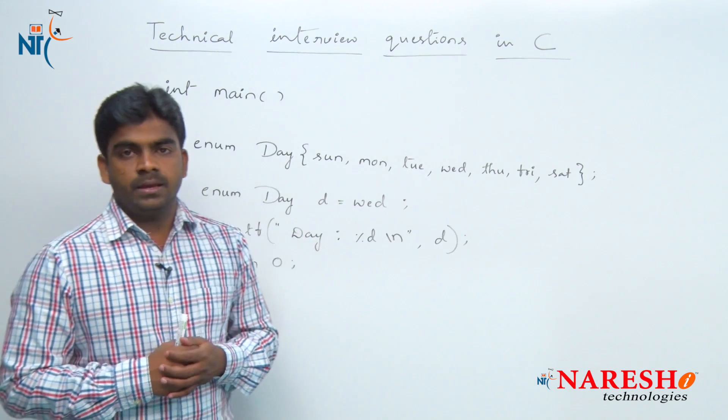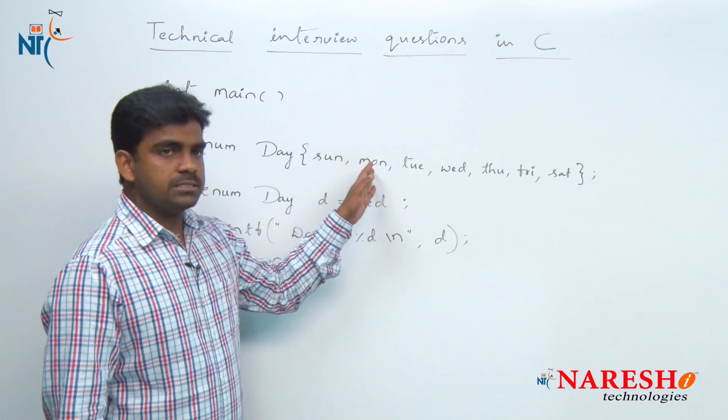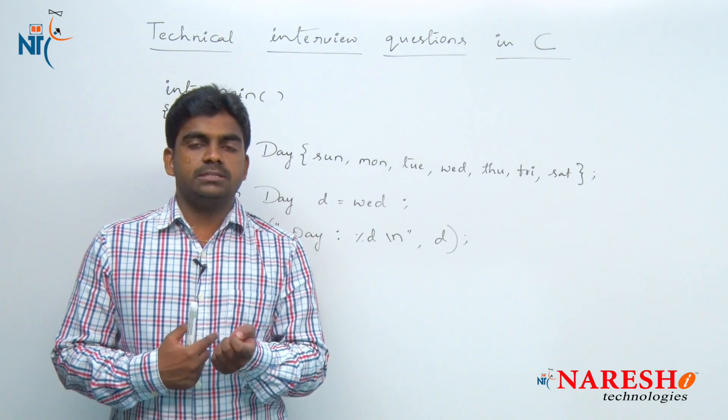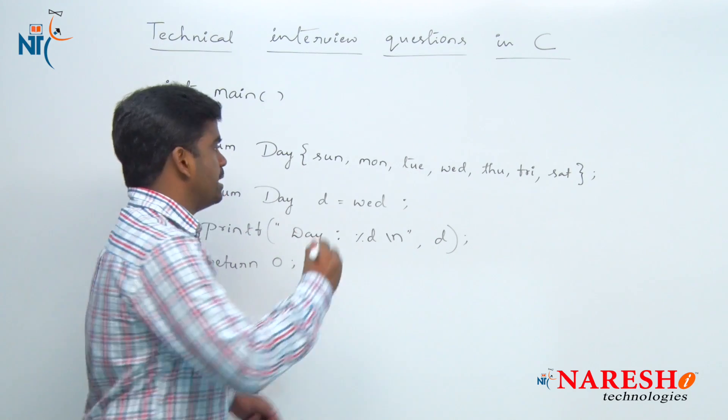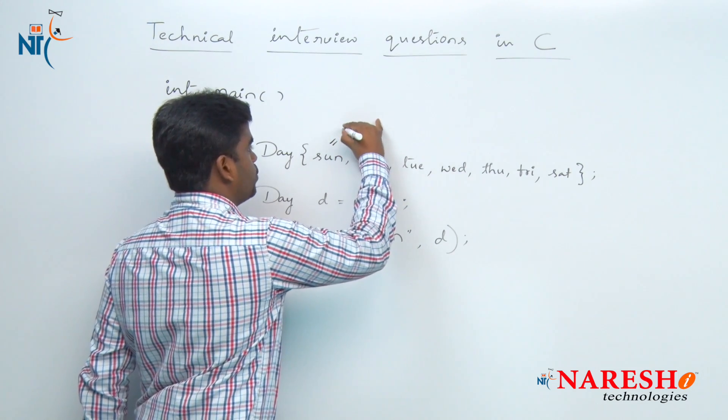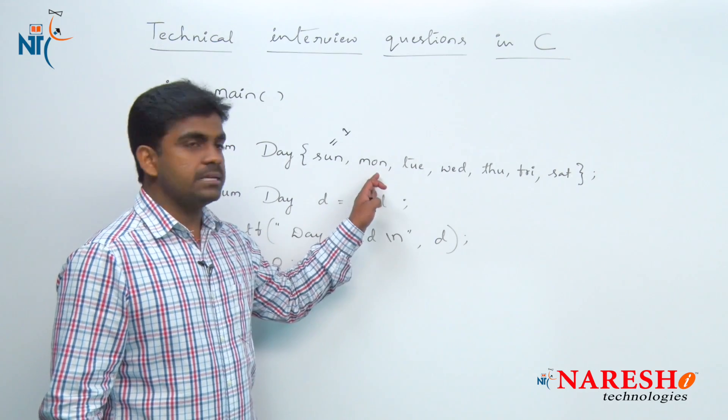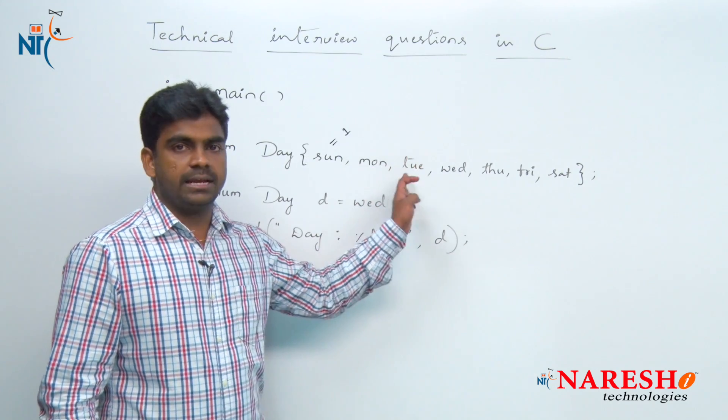And here for all the elements, there are constant integer values. You can set the constant integer values explicitly. For example, if I start Sunday with 1, what is the next element? Monday is 2, Tuesday is 3, so like that it will add.